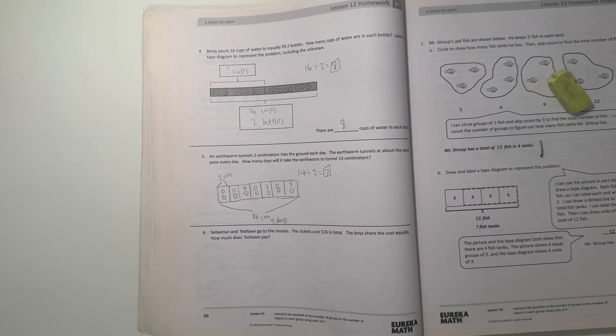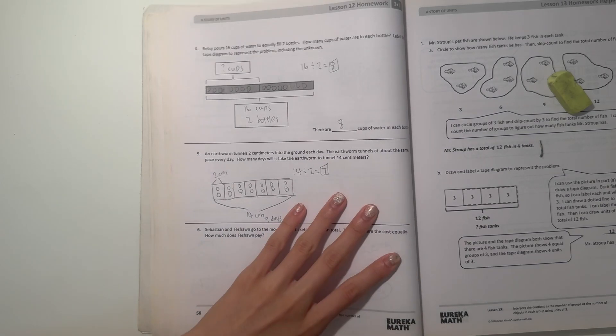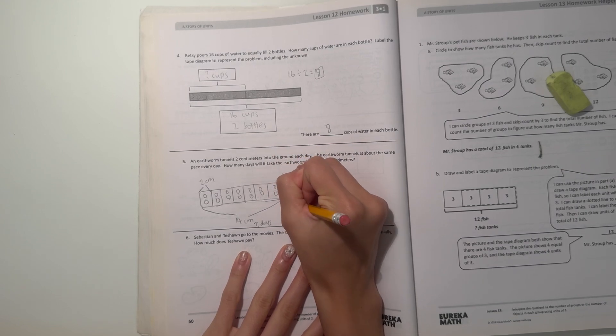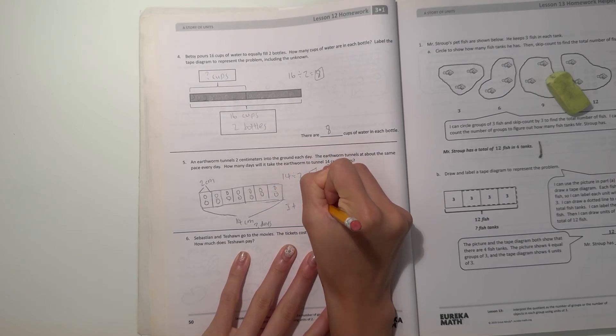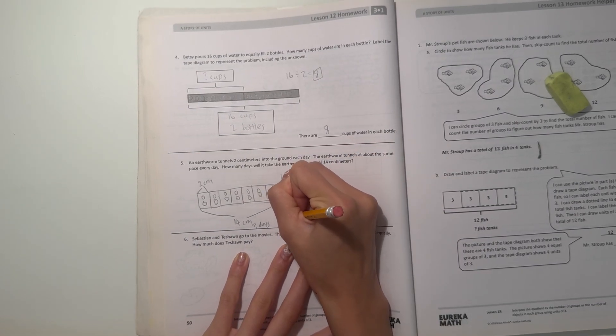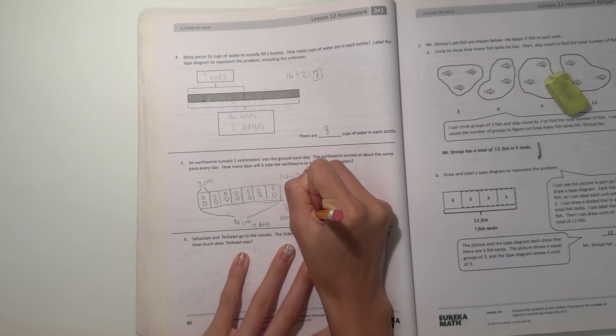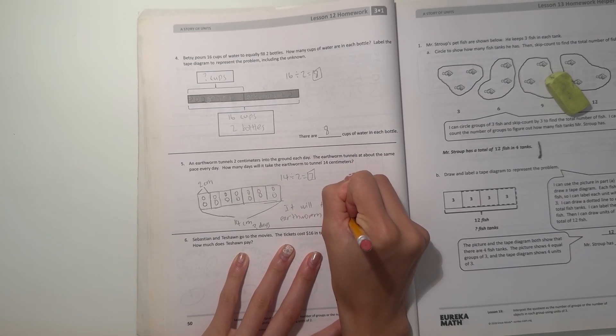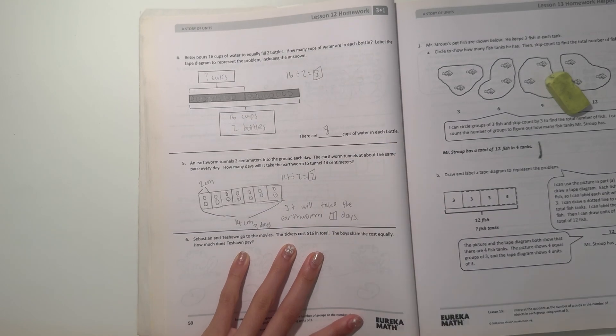So that means it will take the earthworm 7 days. It will take the earthworm 7 days to tunnel 14 centimeters.